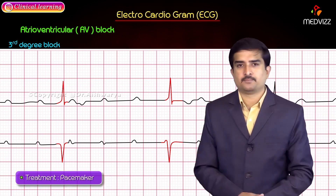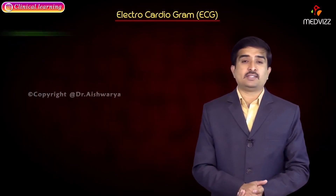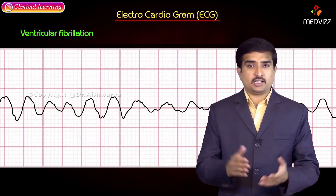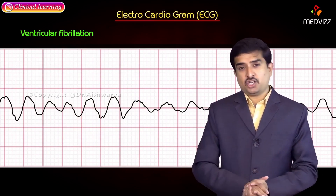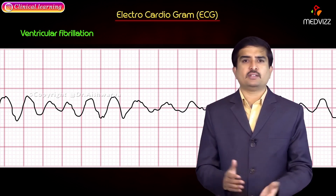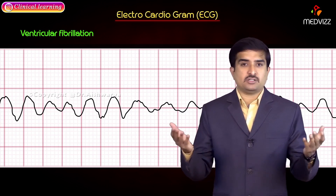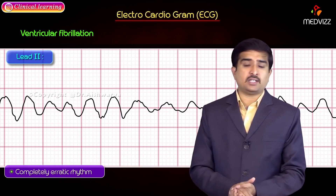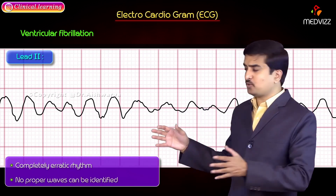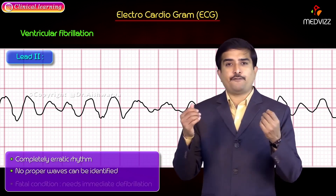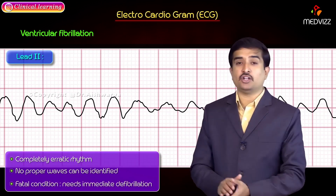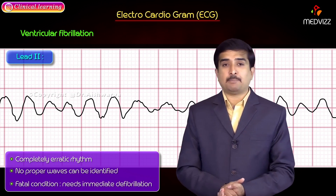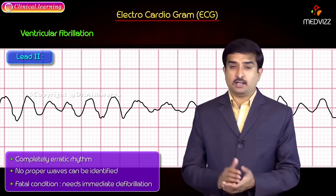Ventricular fibrillation is a completely erratic ventricular rhythm in which no proper waves can be identified in the ECG. More than 90 to 95 percent of patients die from this condition. It is fatal and requires immediate defibrillation. This concludes the discussion on various electrical abnormalities seen in the heart.